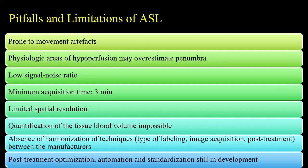There are a few pitfalls and limitations: ASL is very prone to movement artifacts and has a low signal-to-noise ratio, which is why 3 Tesla is better than 1.5 Tesla. A minimum acquisition time of three minutes is required — ideally four minutes, 42 seconds at our institution. Quantification of tissue blood volume is not possible, and post-processing optimization, automation, and standardization are still in development.